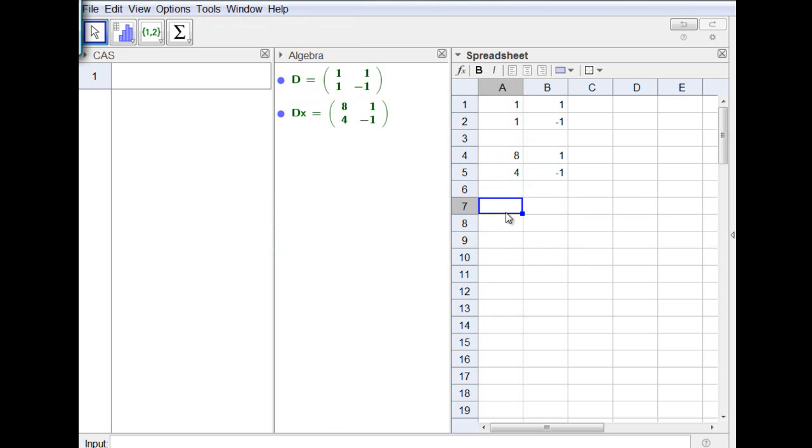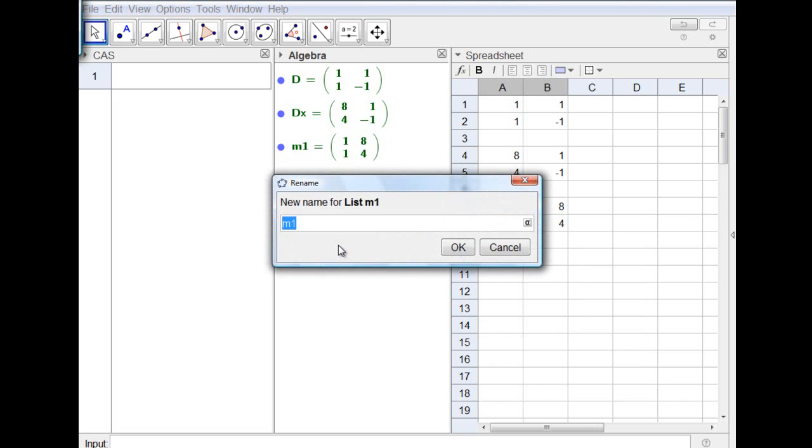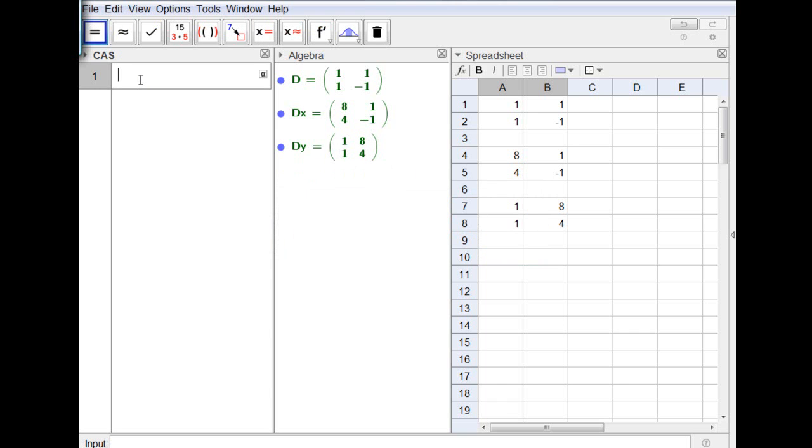Finally, 1, 8, 1, 4. I select, create a matrix, I want to call this Dy. Ready. I go to CAS. In the CAS you put x equals determinant of Dx divided by determinant of the capital D. Press enter and the answer is 6.